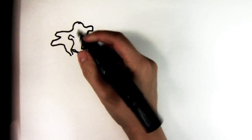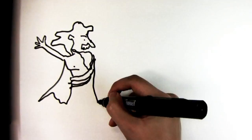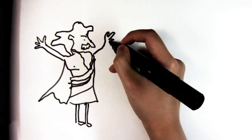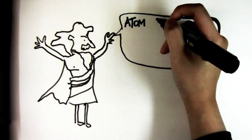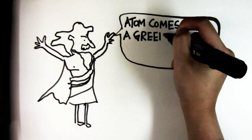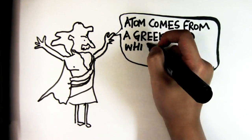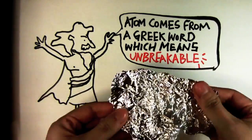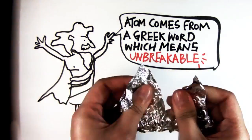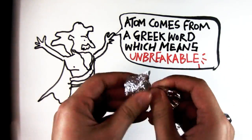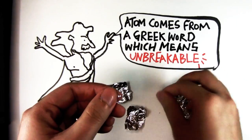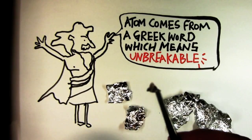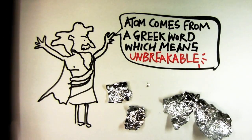Now how did this word atom come about? Back in the olden days, all the way back to 450 BCE, atom came from the Greek word atomos, which means unbreakable. Take an aluminium foil and tear it into small pieces until it reaches a point where you cannot tear it any further. This small piece of aluminium foil is still many times larger than the size of an atom.